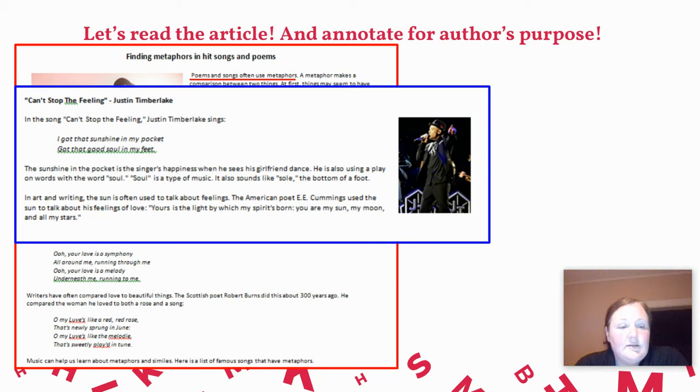In art and writing, the sun is often used to talk about feelings. The American poet E.E. Cummings used the sun to talk about his feelings of love. Yours is the light by which my spirit's born. You are my sun, my moon, and all my stars.